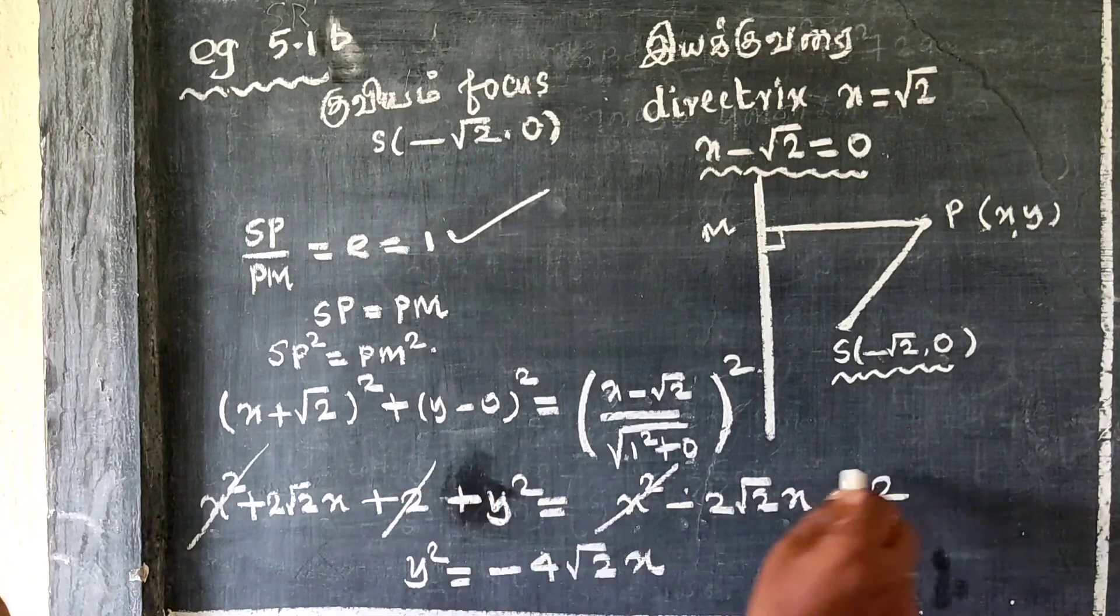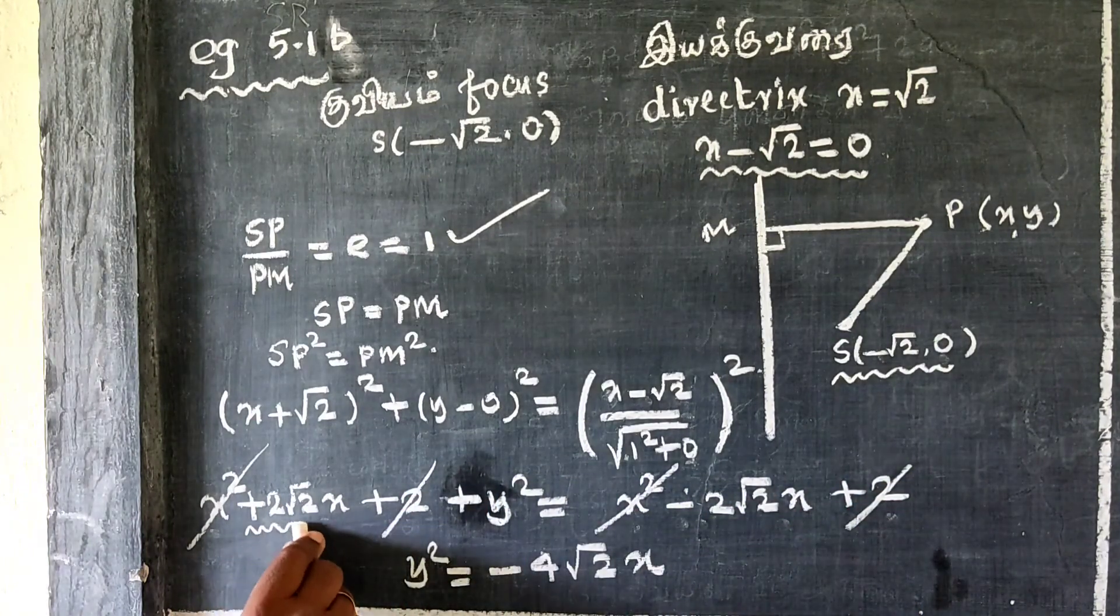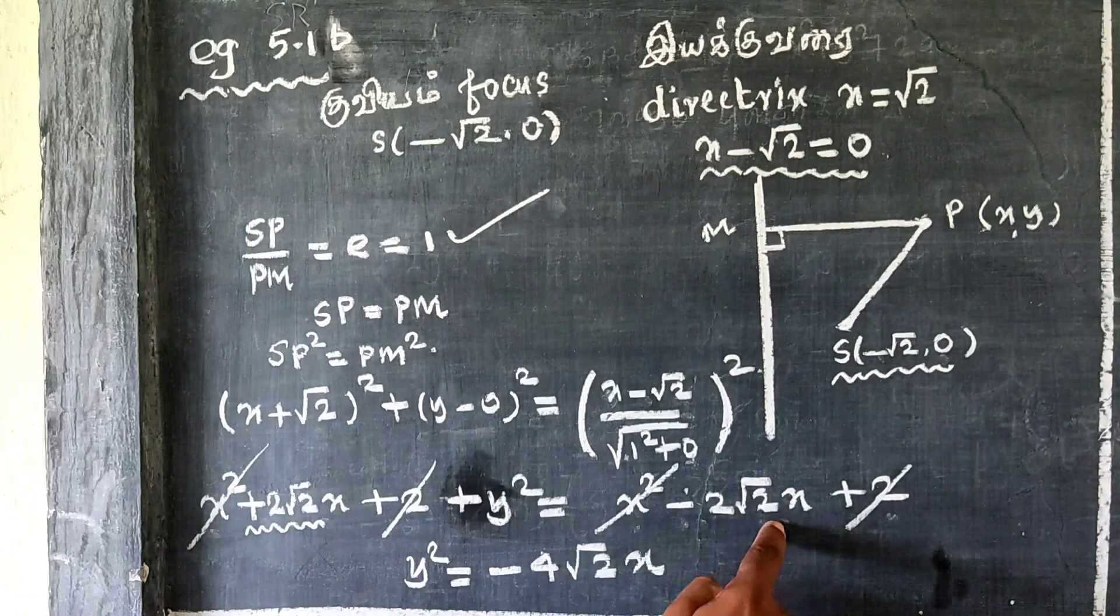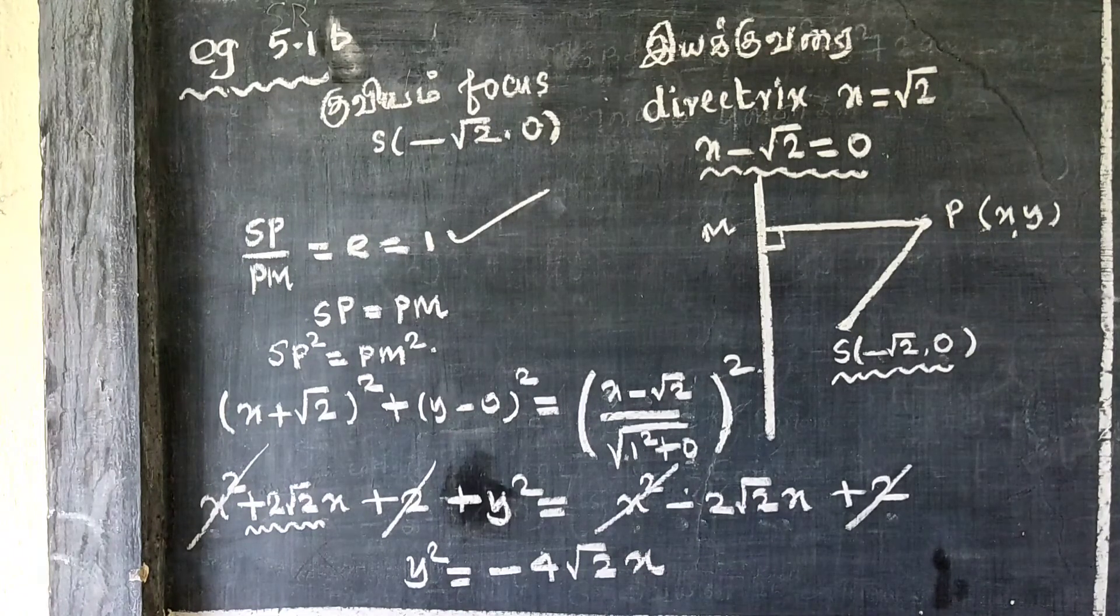The x² terms cancel and the constant 2 cancels. Moving 2√2x to the right side gives -2√2x, which combined with the existing -2√2x equals -4√2x.